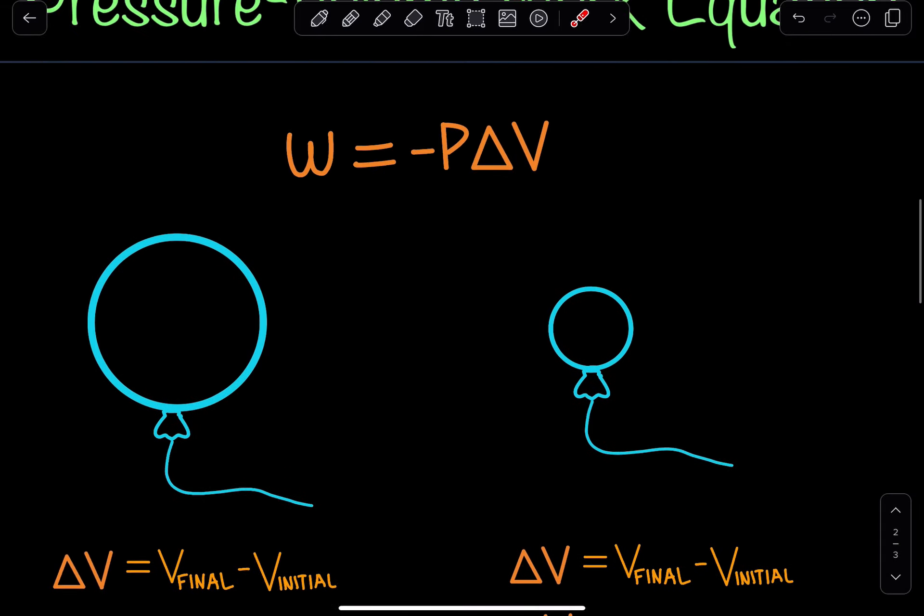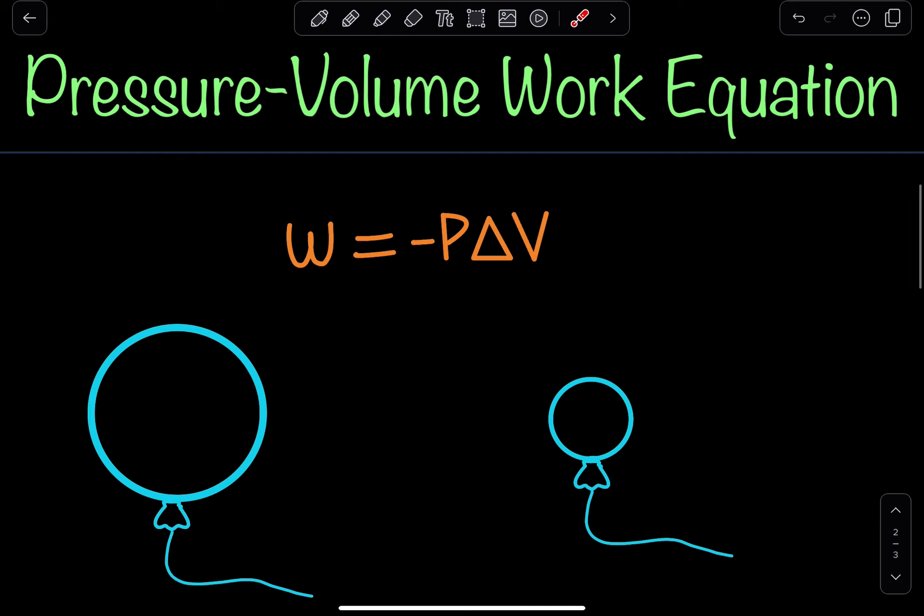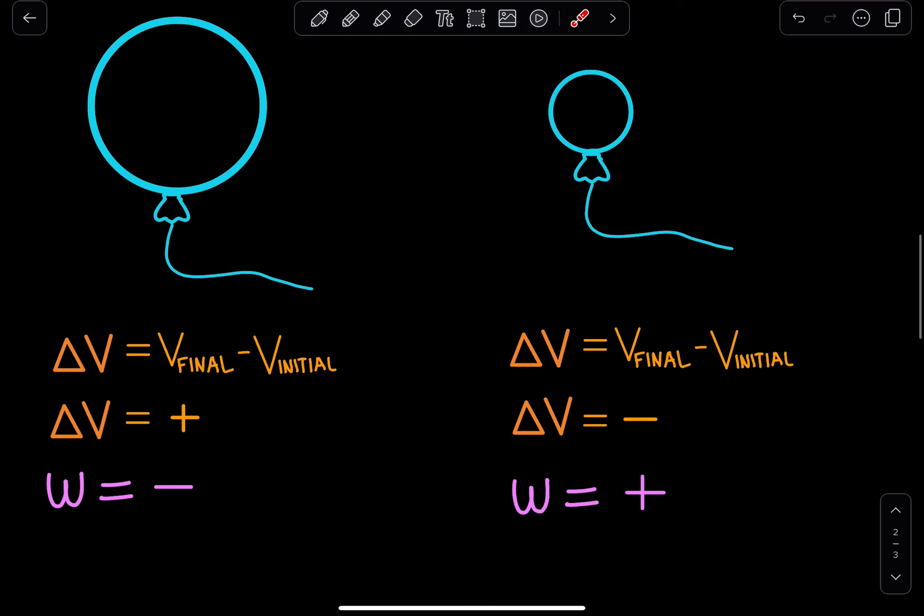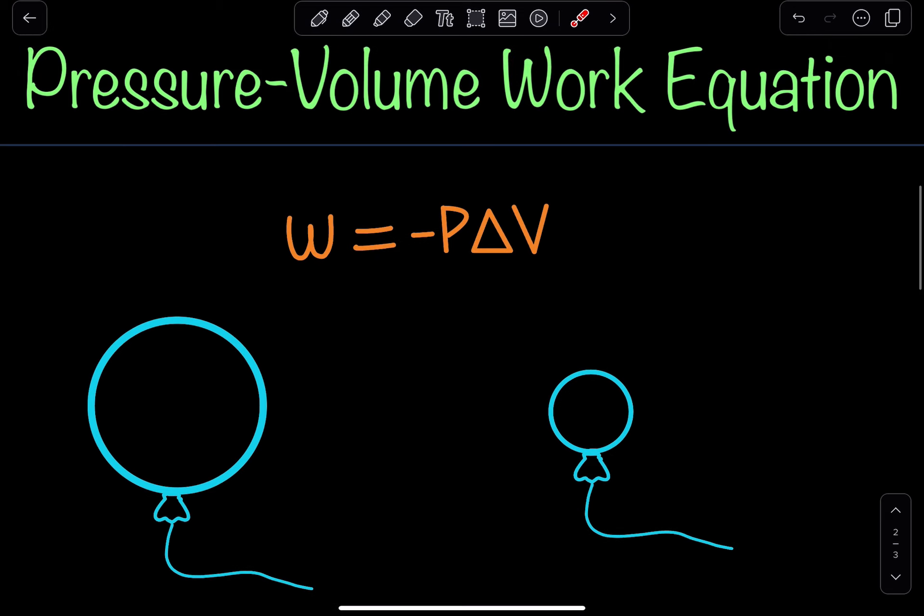And that is essentially the pressure-work-volume equation. It describes this relationship between work, pressure, and volume. And the key things to really understand is this part over here, because if we know whether the change in volume is positive or negative, we can determine whether work is negative or positive, and then we can understand in which direction work is being done. Is it done from the surrounding to the system or the system to the surrounding?